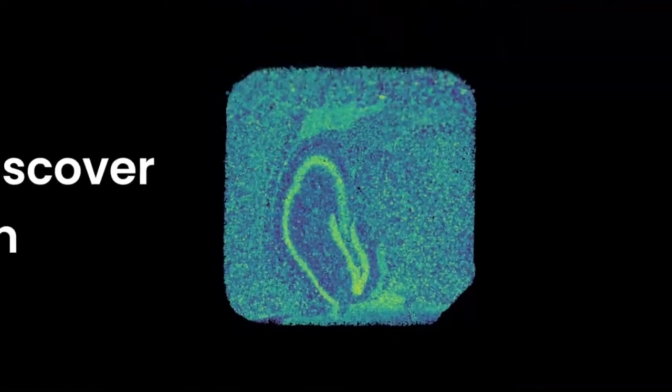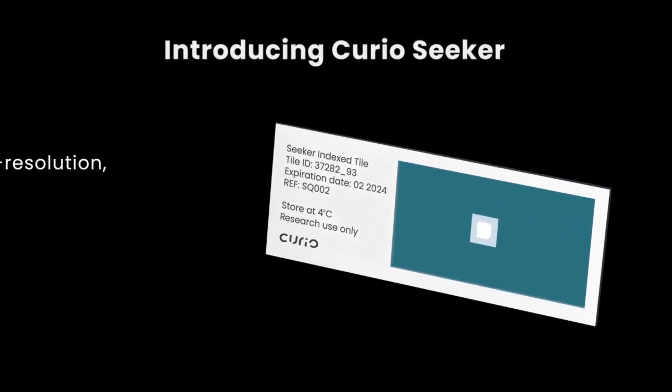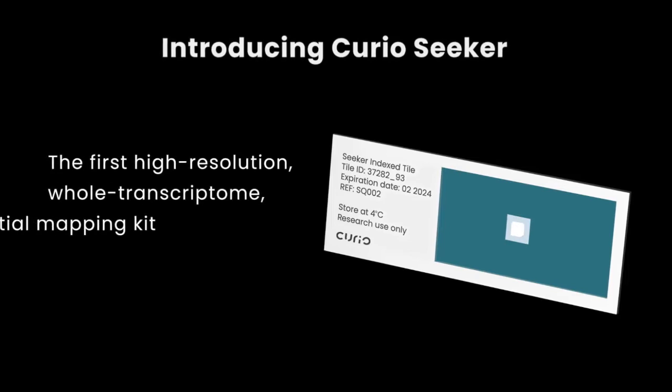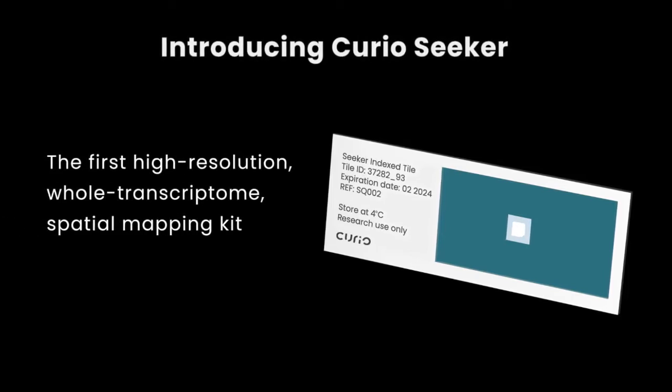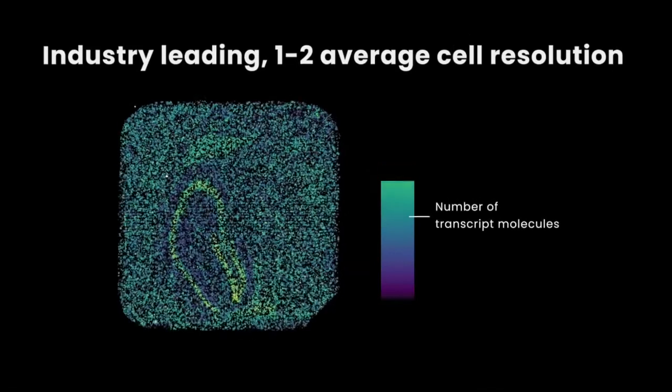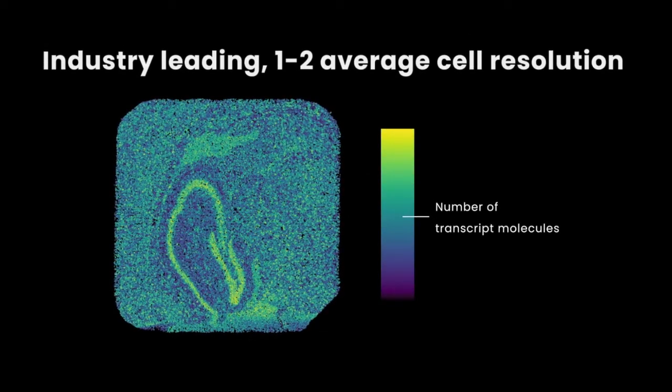Discover the unknown with Curio's revolutionary spatial biology technology, CurioSeeker. Each tile in the CurioSeeker kit enables the end user to obtain whole transcriptome, high-resolution data from any desired tissue, with each 10-micron bead capturing RNA at 1-2-cell resolution.